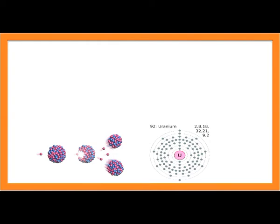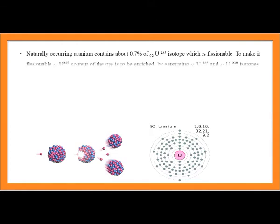Naturally occurring uranium contains about 0.7% of uranium-235 isotope which is fissionable. To make it usable, the uranium-235 content must be enriched by separating uranium-235 and uranium-238 isotopes. This process is known as enrichment of uranium.